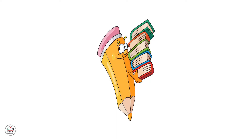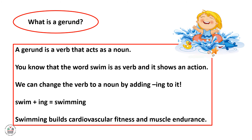Do you know that we can form nouns using verbs? Let's see. What is a gerund? A gerund is a verb that acts as a noun. You know that the word 'swim' is a verb and it shows an action. We can change the verb to a noun by adding 'ing' to it. For example, swim plus ing — swimming.